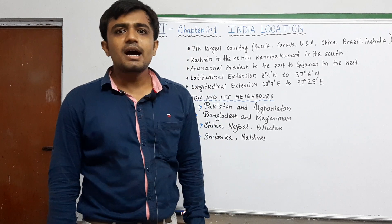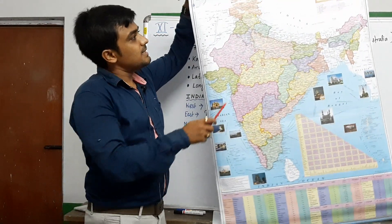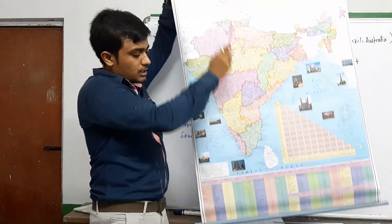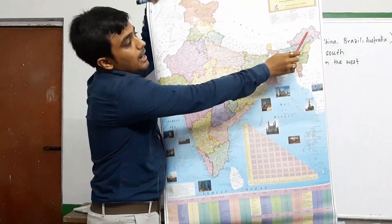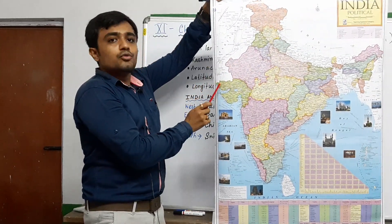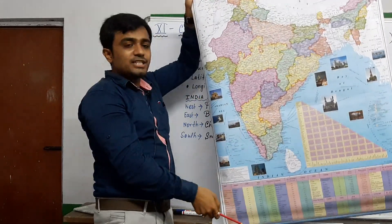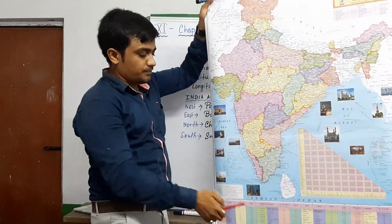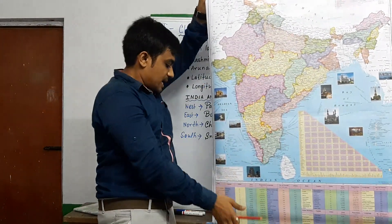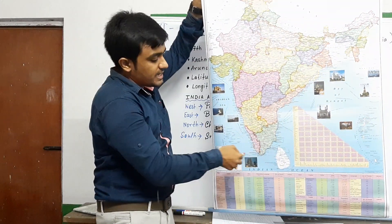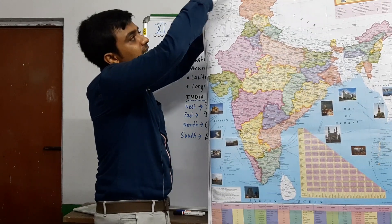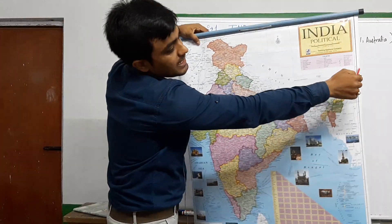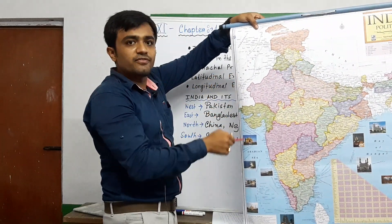Now I want to show you a map of India. This is the political map of India. The mainland extends from Kashmir in the north to Kanyakumari in the south, and from Arunachal Pradesh in the east to Gujarat in the west. The latitudinal extension is 8°4' N to 37°6' N, and the longitudinal extension is 68°7' E to 97°25' E.